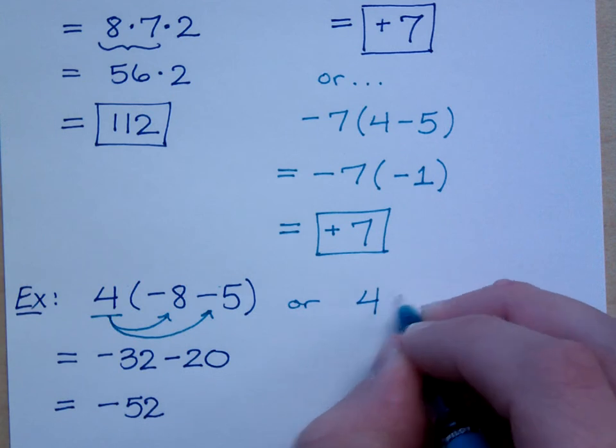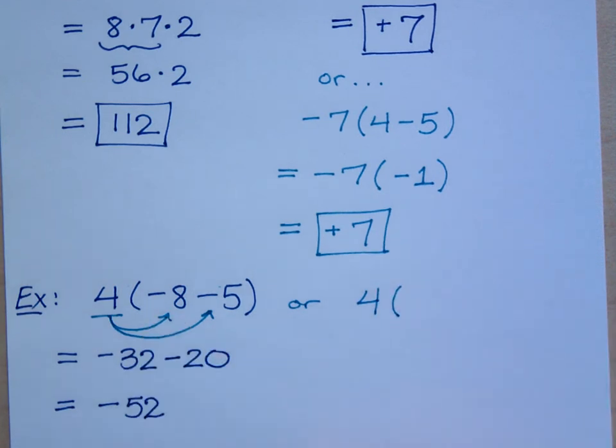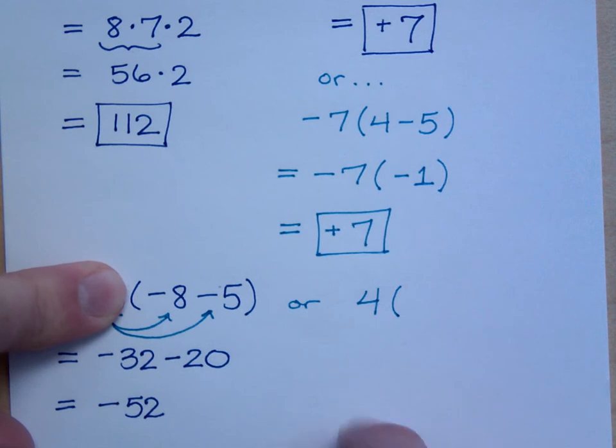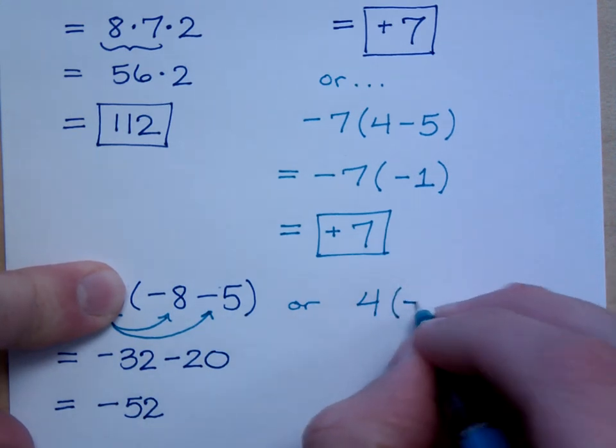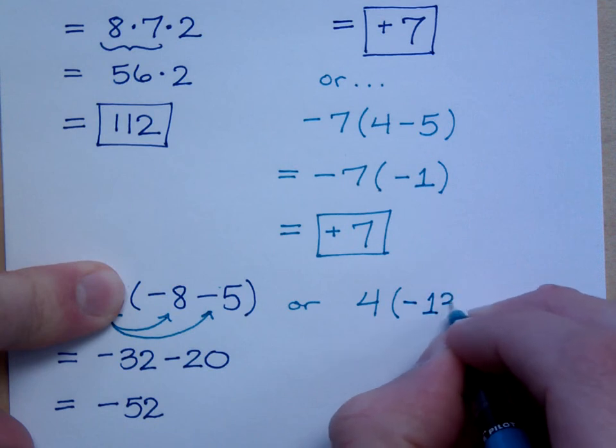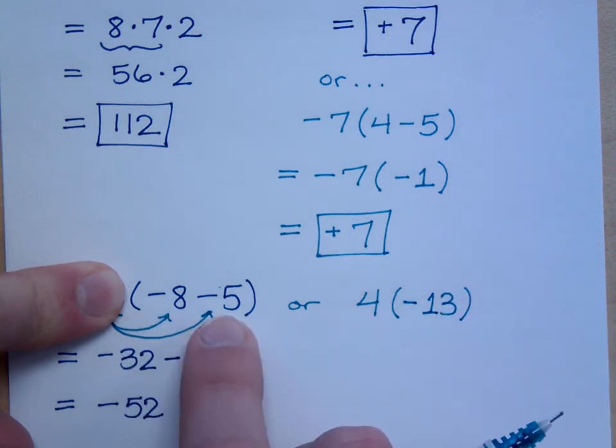Or if you wanted to, you could have said this: 4 times what? If you combine the stuff inside the parentheses first, what's negative 8 minus 5? That's a negative 13, right? You lose 8, you lose 5.